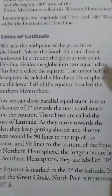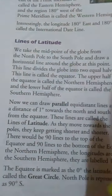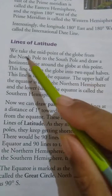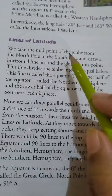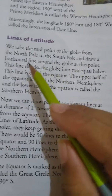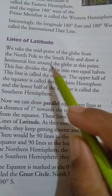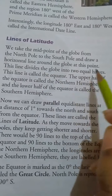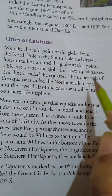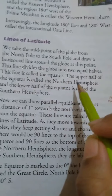Next topic: lines of latitude. We take the midpoint of the globe from the North Pole to the South Pole and draw a horizontal line around the globe at this point. The line divides the globe into two equal halves. This line is called the Equator.